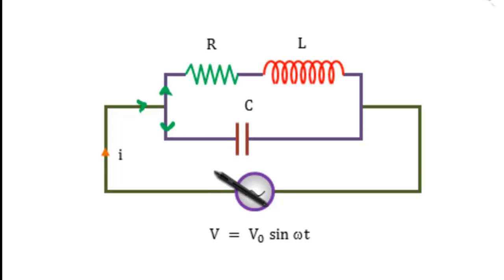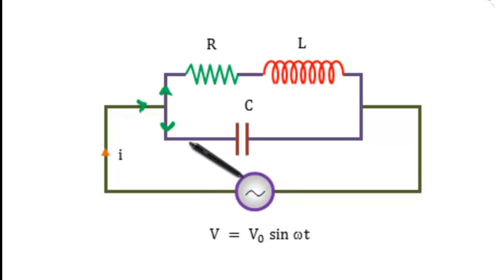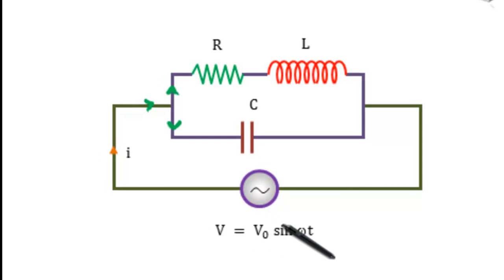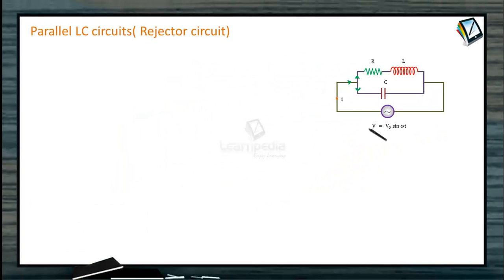So V by Z, if considered, will be equal to V divided by (R plus j·omega·L), and this will be plus 1 by (j·omega·C). So we can calculate the value of admittance, or 1 by Z, from here.